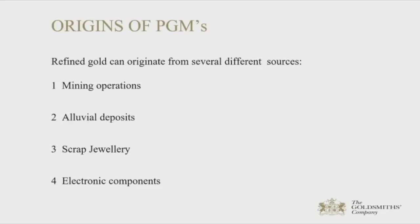Scrap jewellery will certainly contain relatively high amounts of PGMs, like palladium in some white golds, and rhodium probably from plate in layers. There may also be small amounts of platinum, rhodium, or ruthenium likely from grain refiners. Although these are small amounts, they could build up over time in recycled scrap material and may still be present at trace levels in high-grade gold greater than 995.